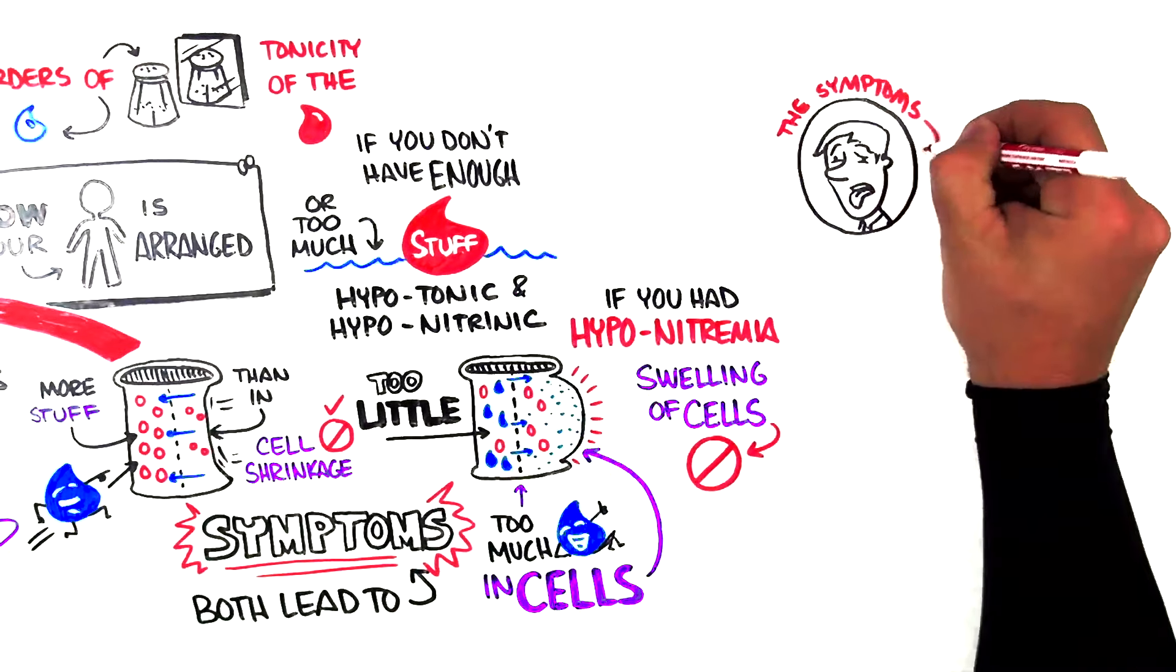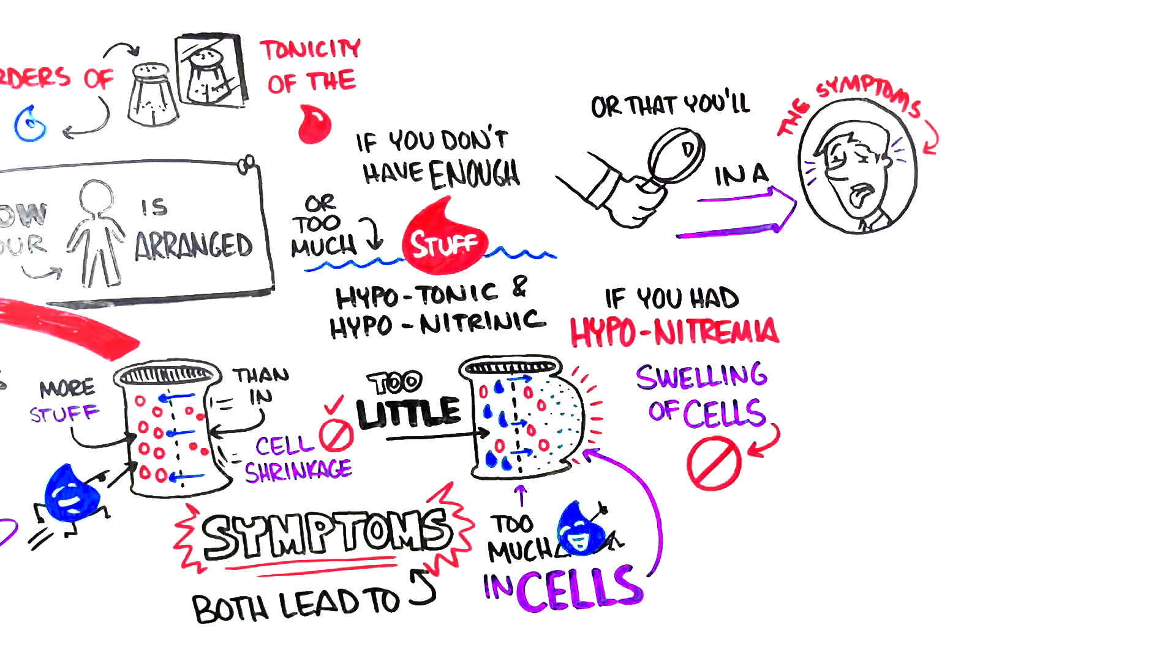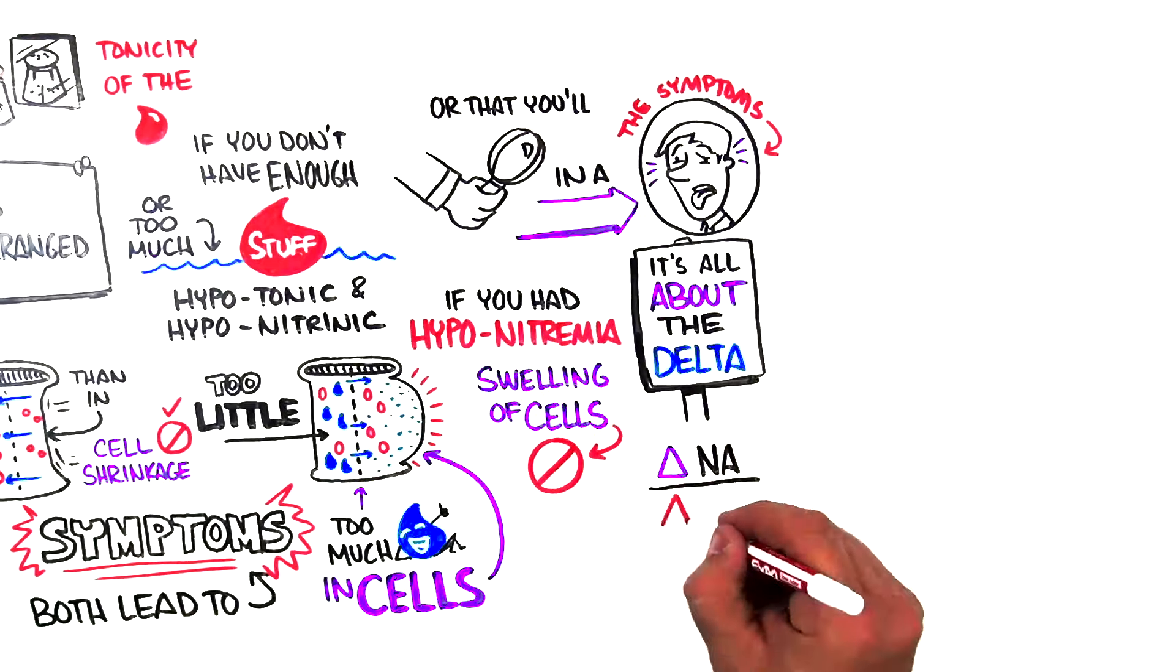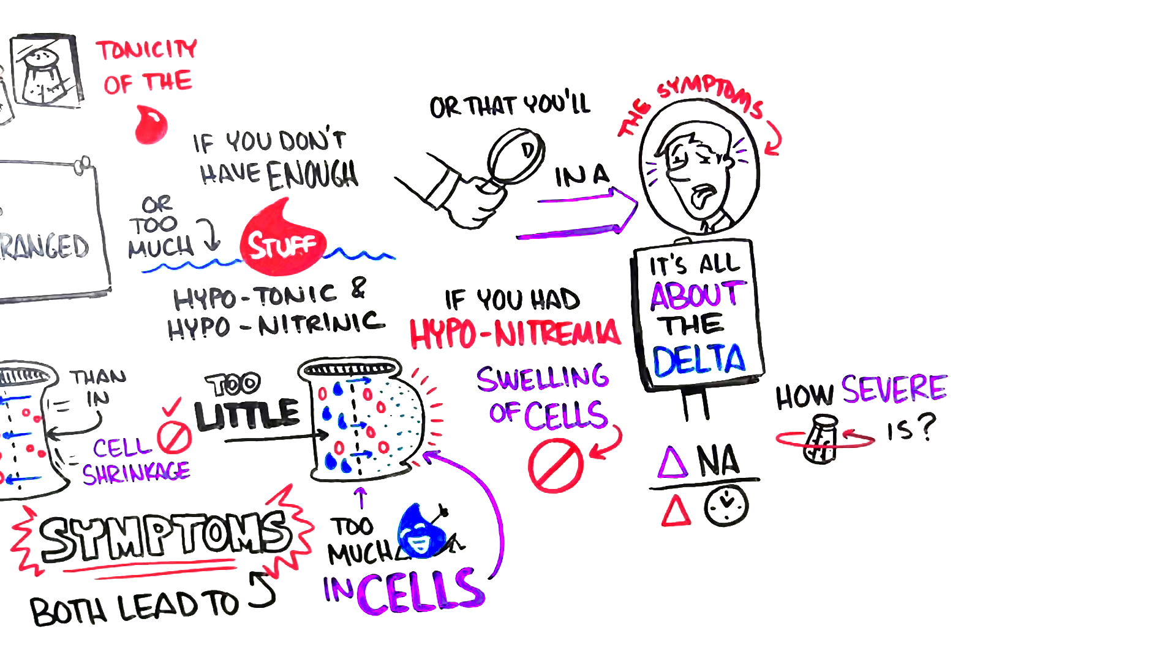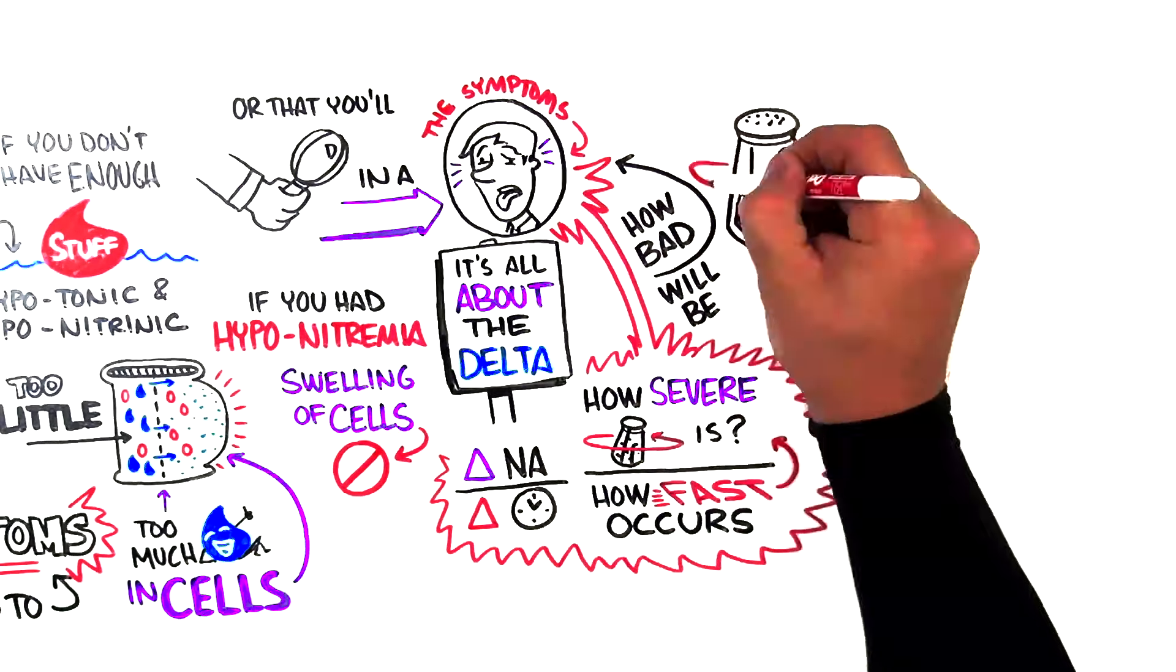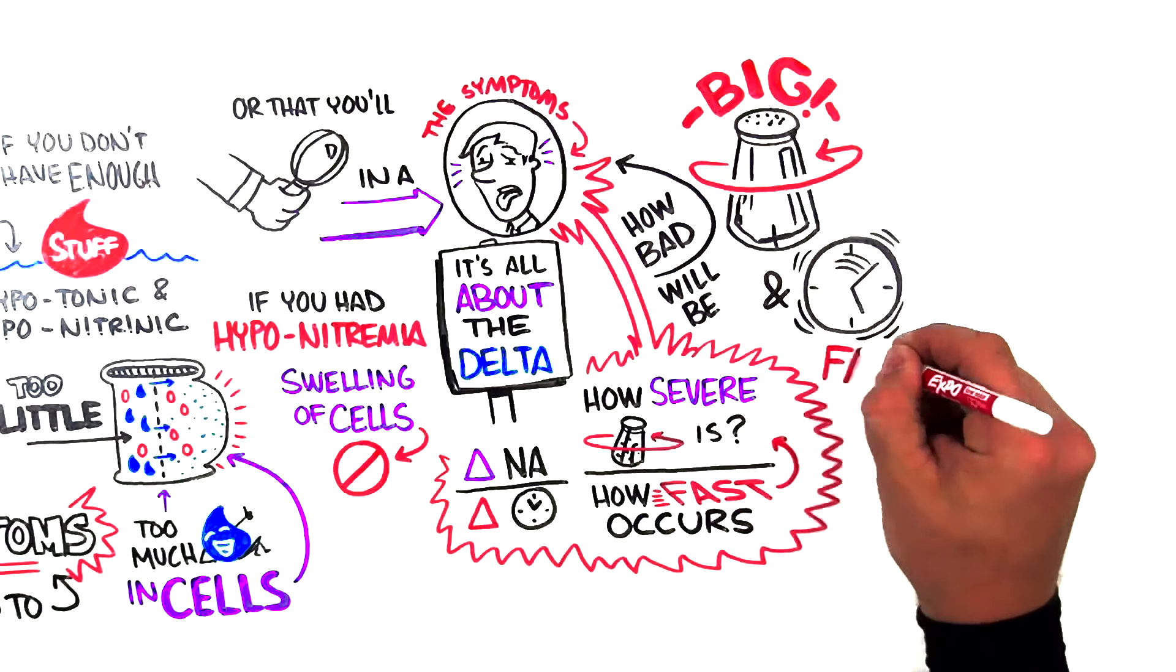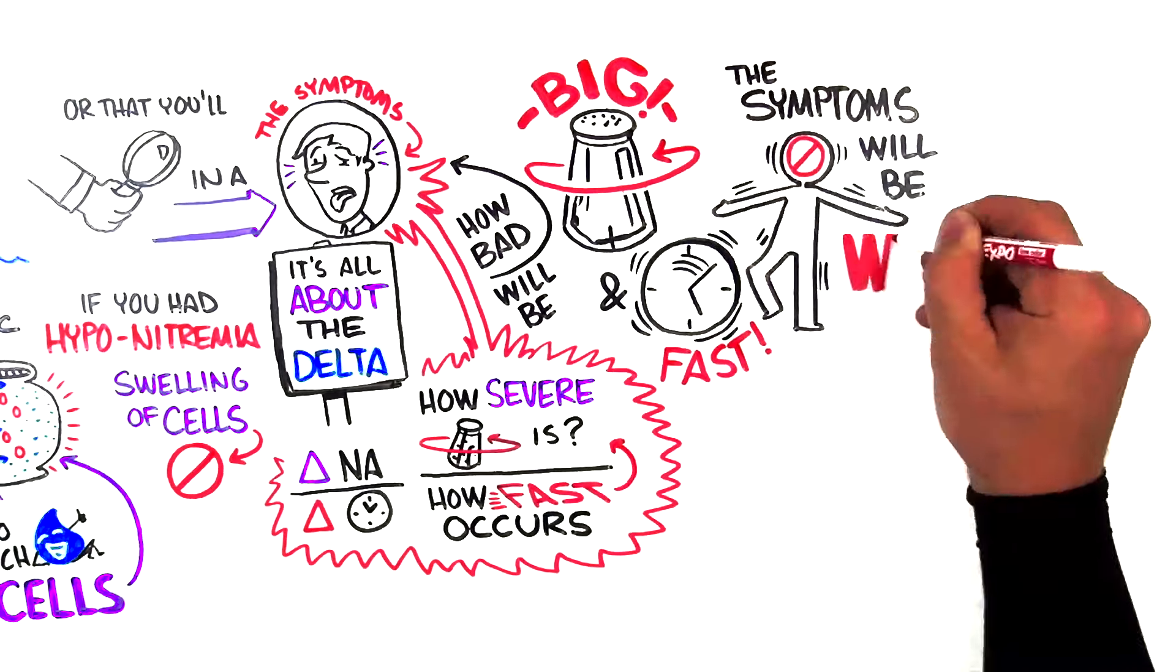But the symptoms the person is going to feel or that you're going to notice in a patient is going to be dependent on calculus. What I mean by that is it's all about the delta. It's the change of sodium over the change in time. That is, how severe the sodium change is relative to how fast that change occurs that is going to cause how bad the symptoms are going to be. So if your sodium shift is big and the amount of time it takes to get there is fast, the body is not going to have time to adjust and the symptoms are going to be worse.